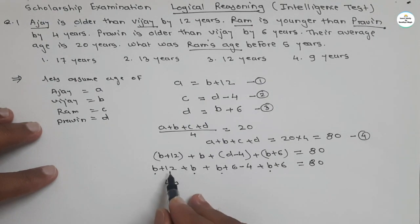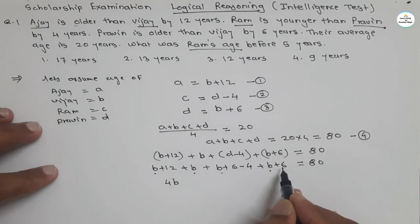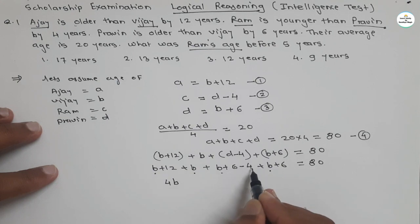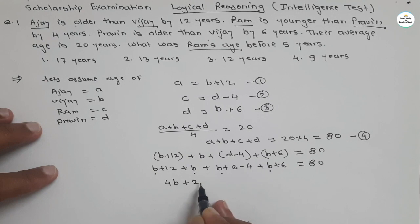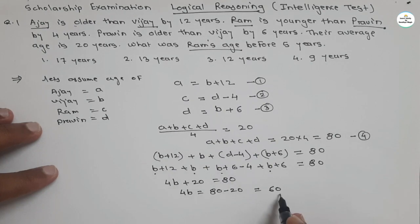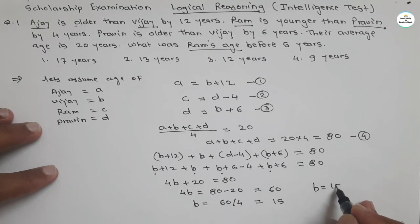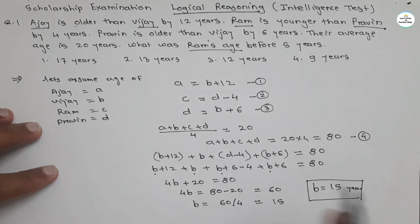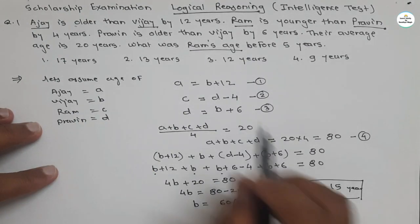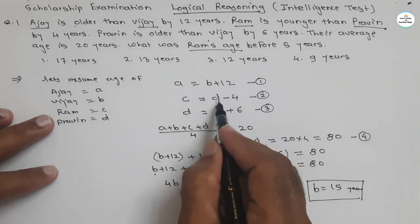We have four b terms giving 4b, and the constants: 12 + 6 − 4 + 6 = 20. So 4b + 20 = 80. Transferring 20: 4b = 60, so b = 60 ÷ 4 = 15. We got b = 15, meaning the age of Vijay is 15 years. But what is asked is Ram's age, which we considered as c.